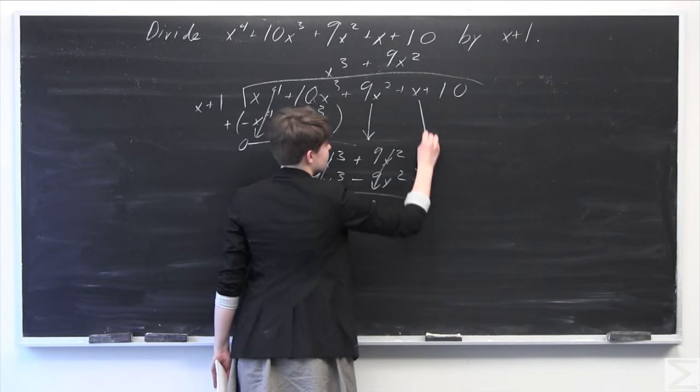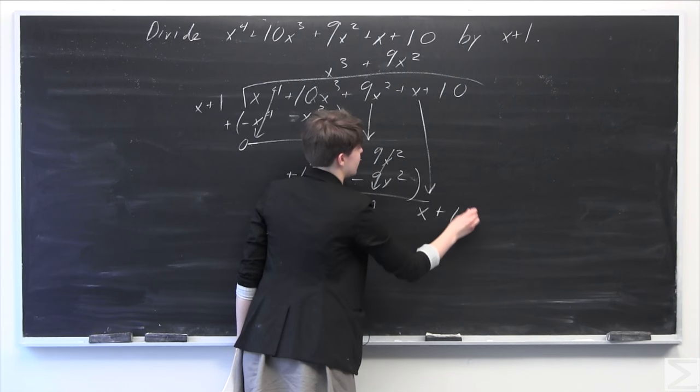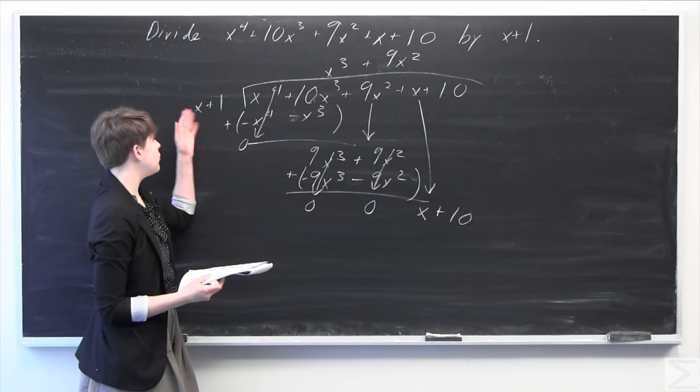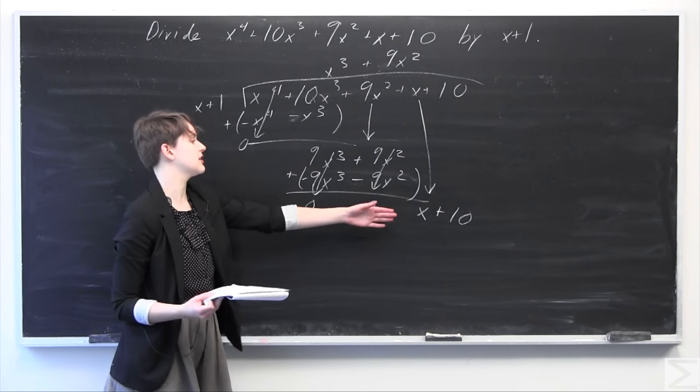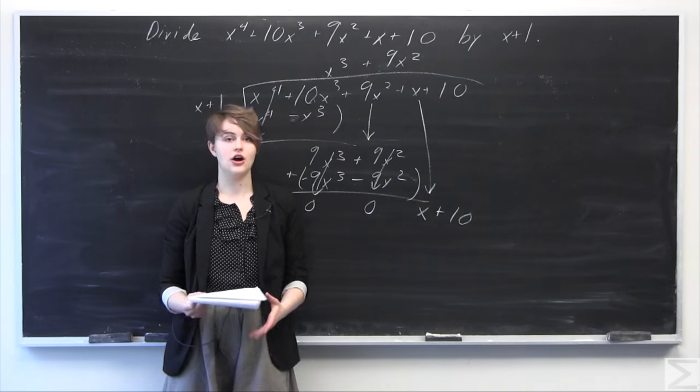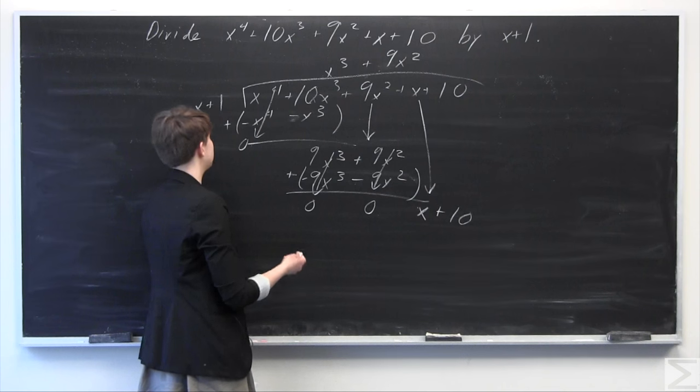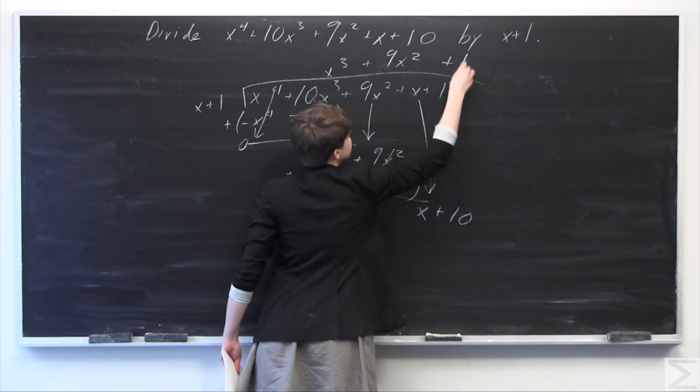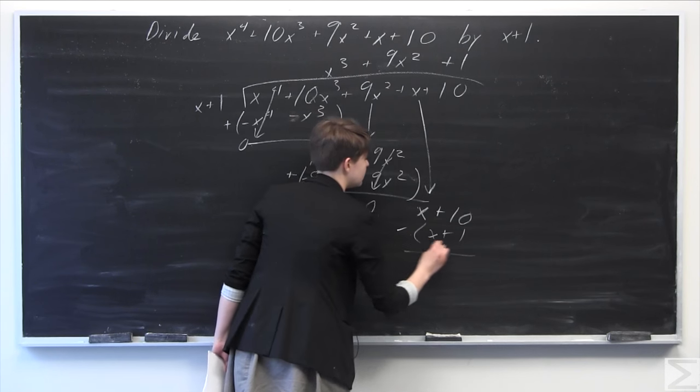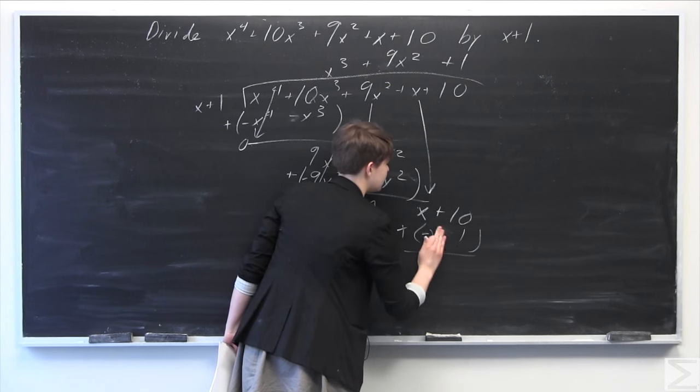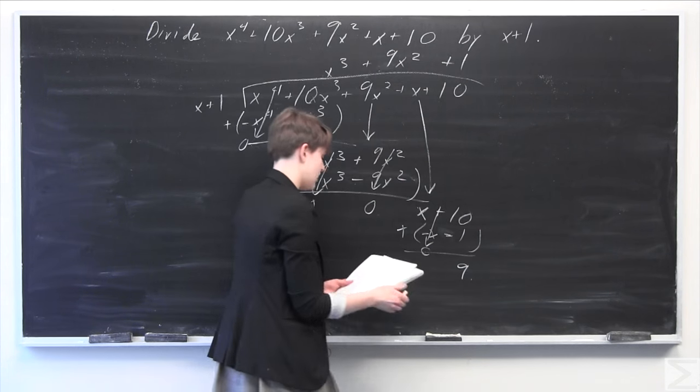So we just have this one last term down here. So we have plus x plus 10 from over there. So now we can see that we need to multiply x plus 1 only by 1 in order to get it to go into x plus 10 because the exponent, I should say, and the coefficient are the same. So we're going to multiply by 1 here. So 1 times x plus 1 is just x plus 1. Subtract here. Distribute that negative. So x minus x is going to be zero. And 10 minus 1 is going to be 9.